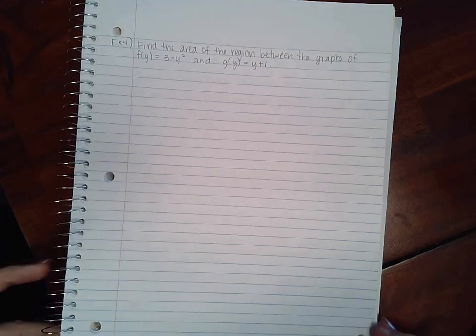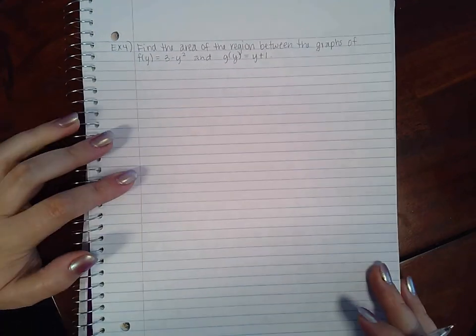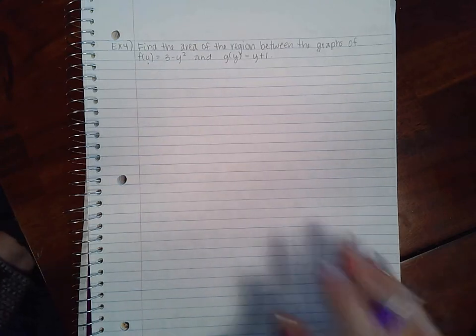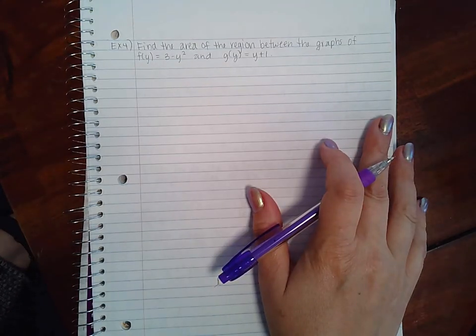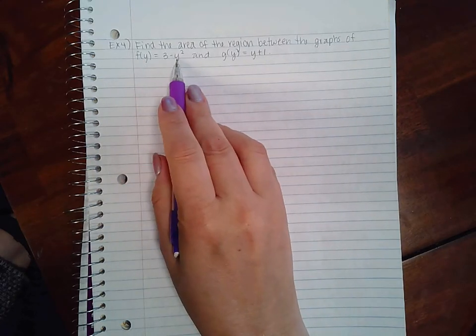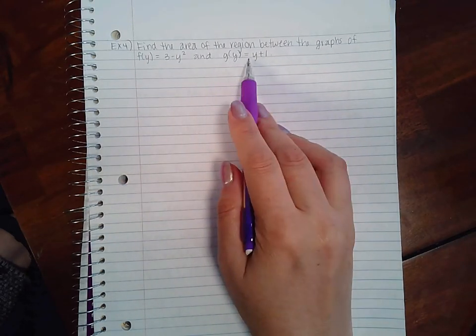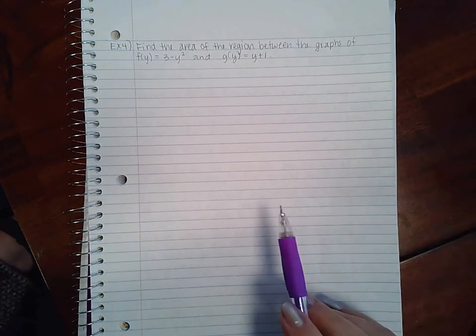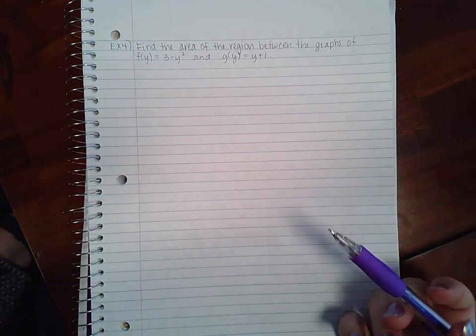This is another video for section 7.1. In this video we're going to cover example 4. Find the area of the region between the graphs of f(y) = 3 - y² and g(y) = y + 1.